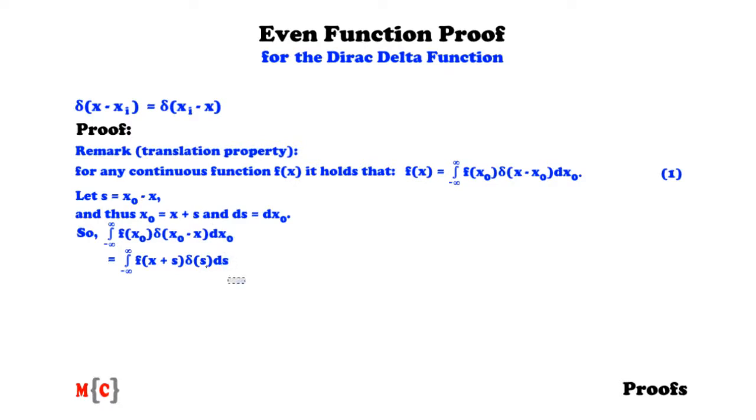Now from this integral we have to note that δ(s) will only be non-zero if s equals zero. Therefore, as a non-zero output we will have that f(x + s) will just be f(x) because s is equal to zero in this case. So the output of the integral will be f(x).